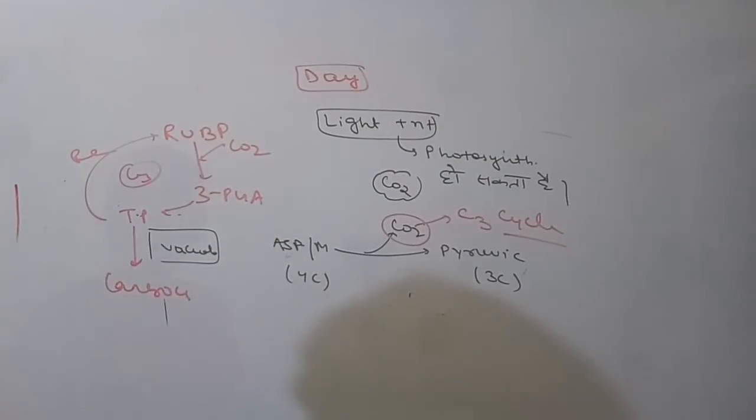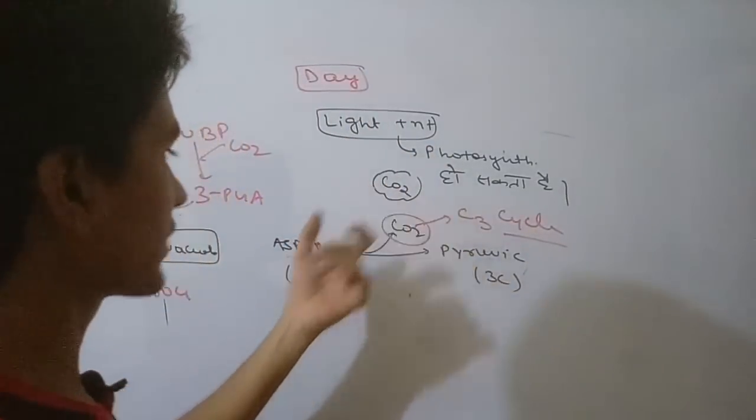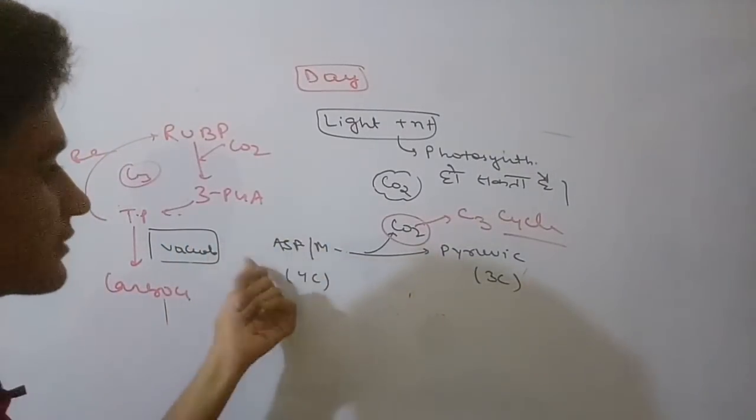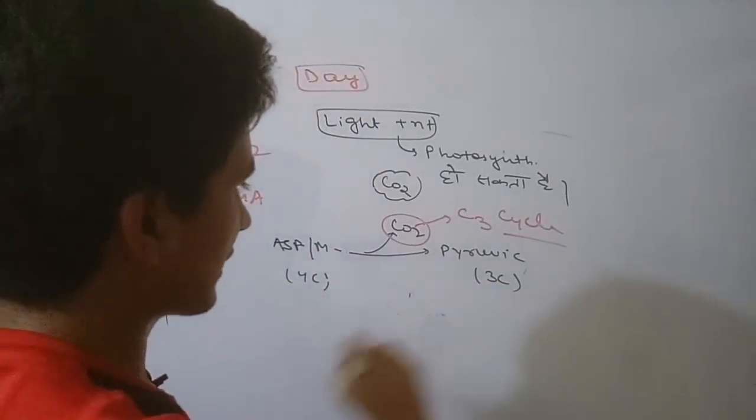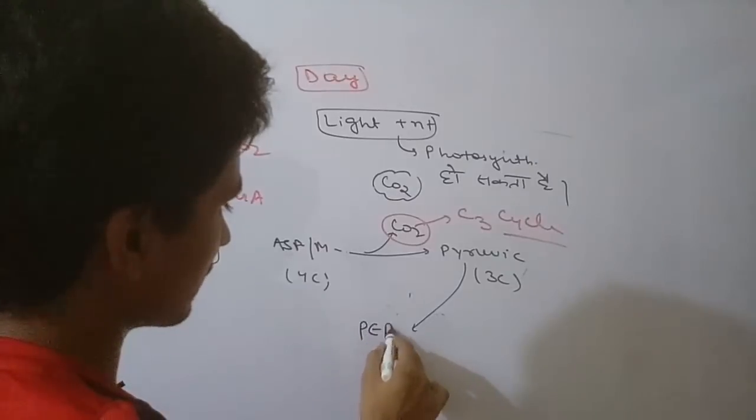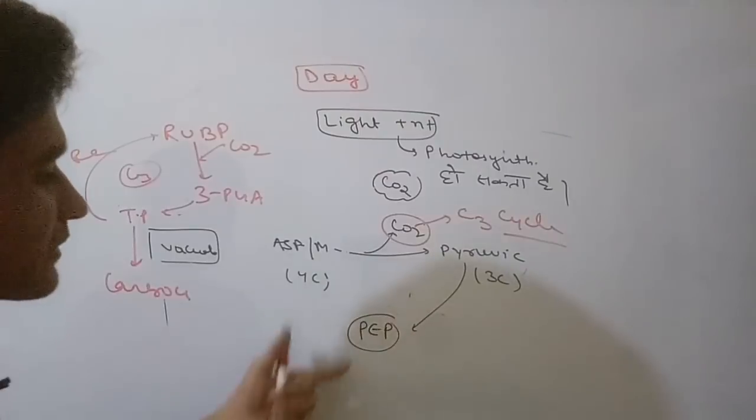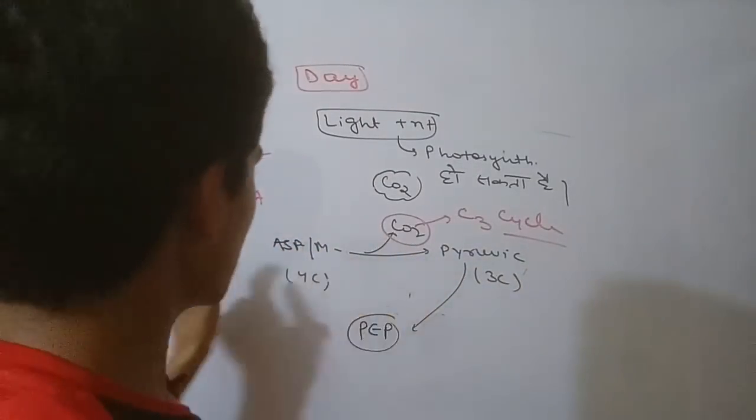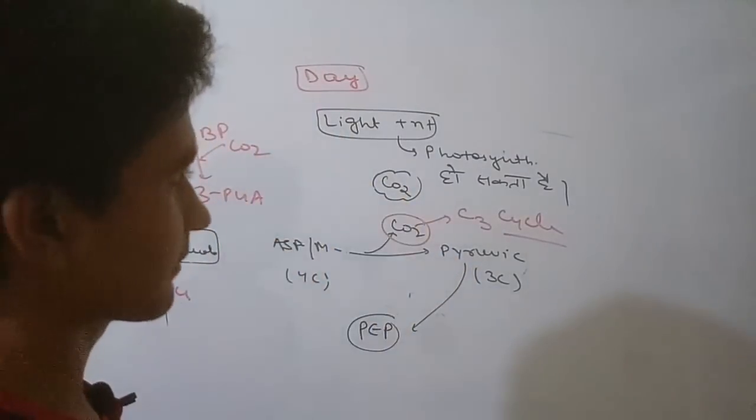Similar to C4: light present during daytime, aspartic acid and malic acid release CO2. CO2 is released and pyruvic acid regenerates to form PEP again. At night, CO2 is accepted and during day CO2 is released. This is the mechanism behind the CAM pathway.